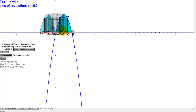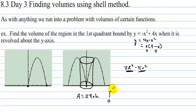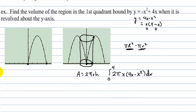Sweeping the shell represents all the cylinders we could possibly create. The integral adds up all of those areas. The lateral surface area of one cylinder is 2πrh. We integrate from 0 to 4, adding up all the cylinders. The radius goes from the y-axis to an arbitrary x value, so the radius is just x. The height goes from the x-axis to the curve, which is the function value: 4x minus x squared.